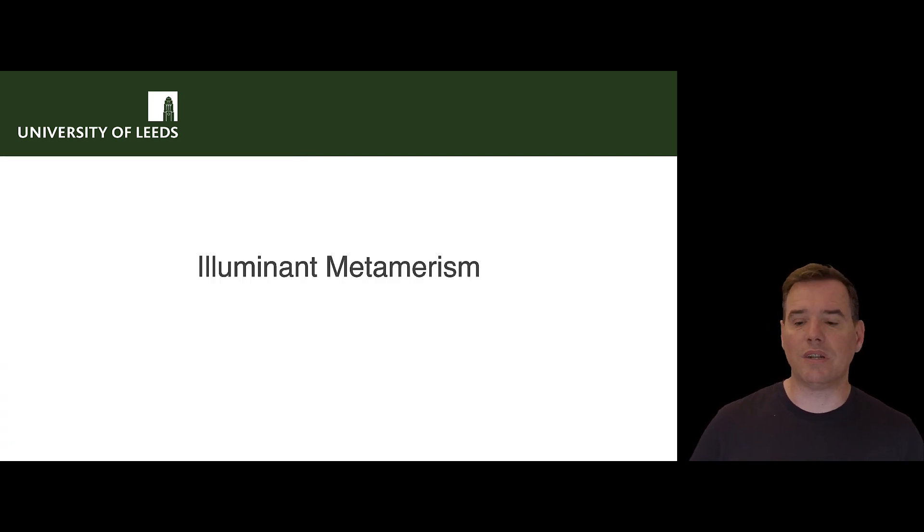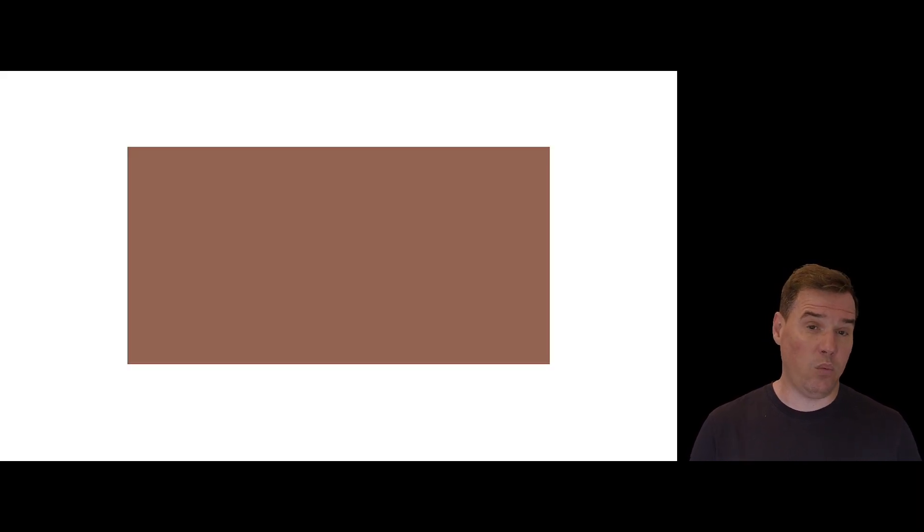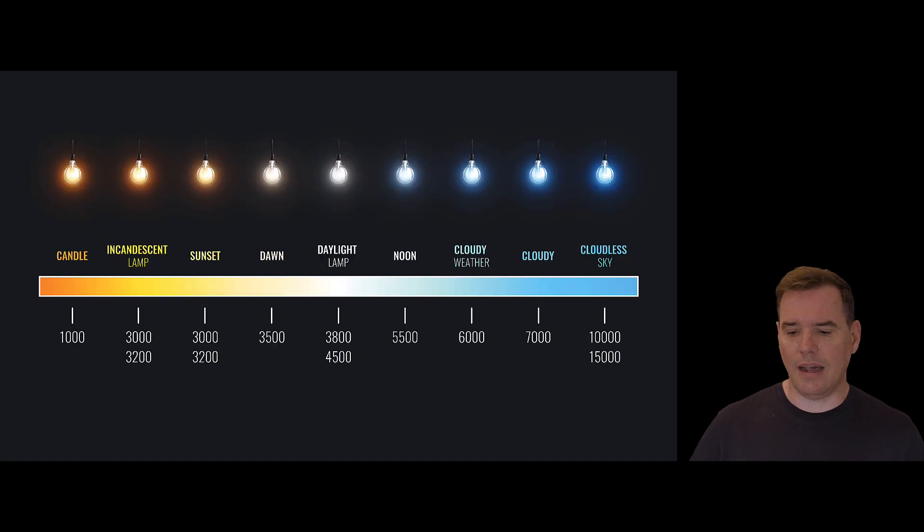Illuminate Metamerism, what does it mean? Illuminate Metamerism means that two objects can have the same color under one light source, but not under another light source. So I am sure that most of you are familiar with the term color temperature. Color temperature is a parameter that describes the color of a visible light source. Different light sources have different color temperatures. And when you shine these different color temperatures onto objects, then they will change their color as well. And this is called color inconstancy.